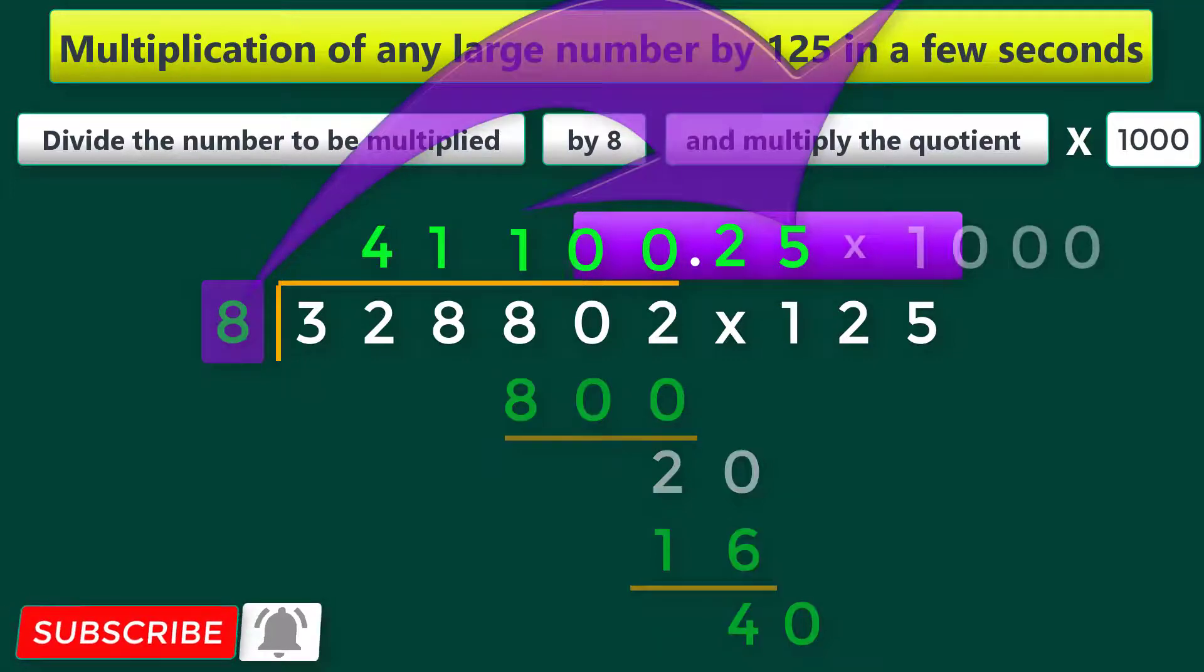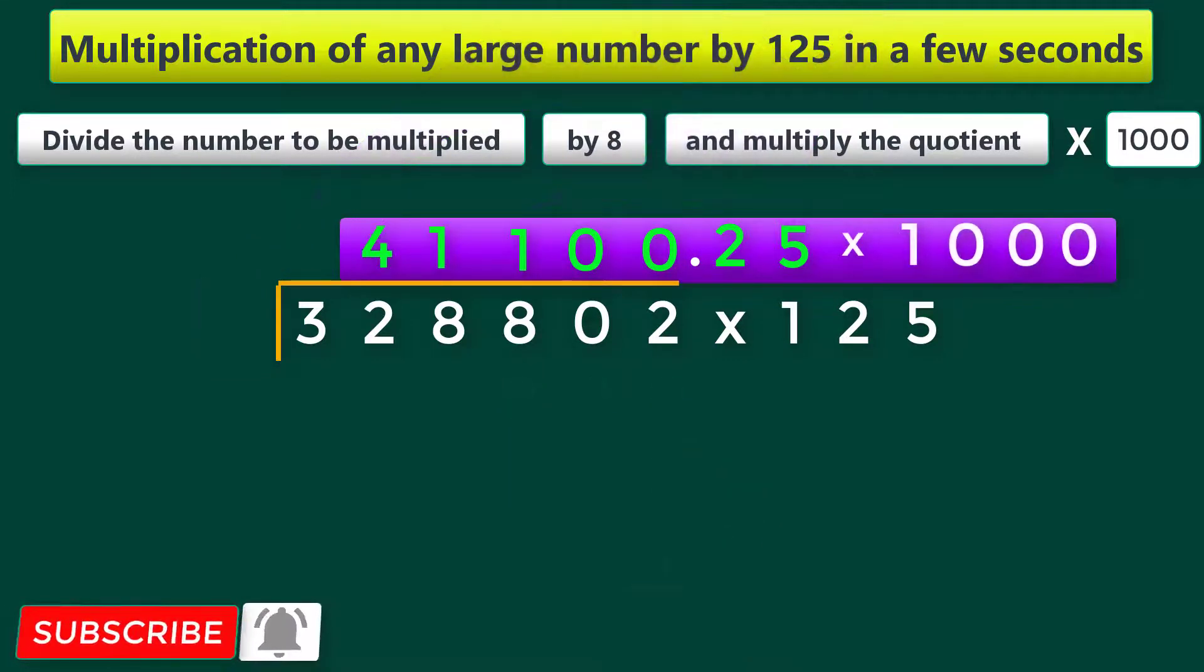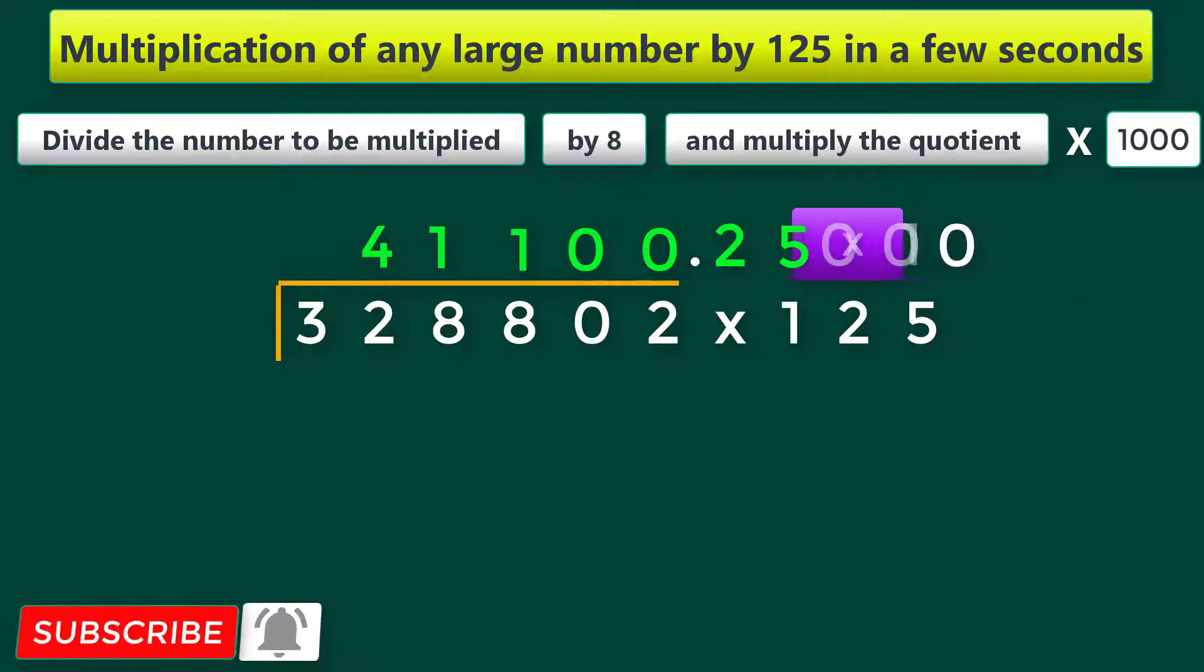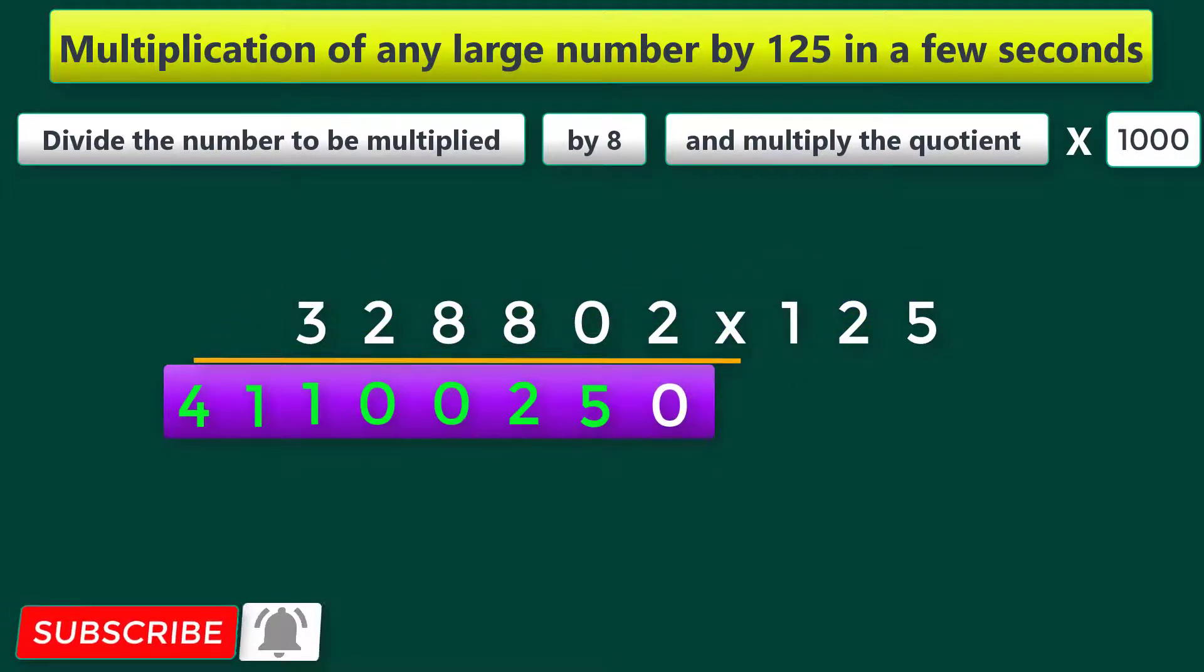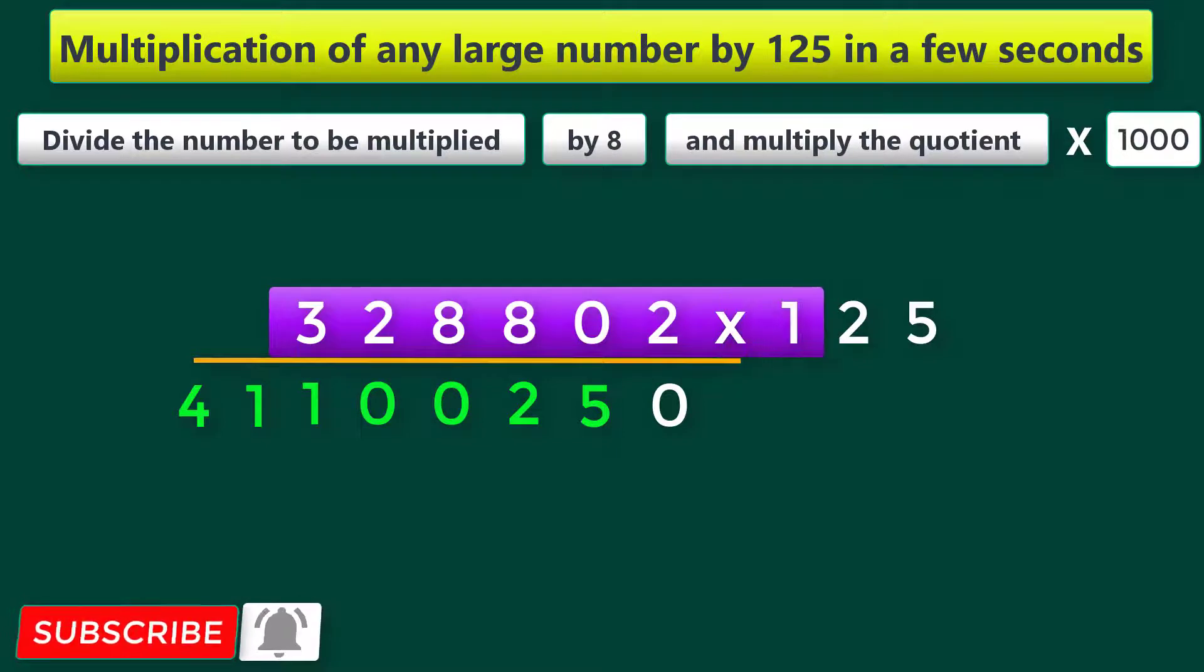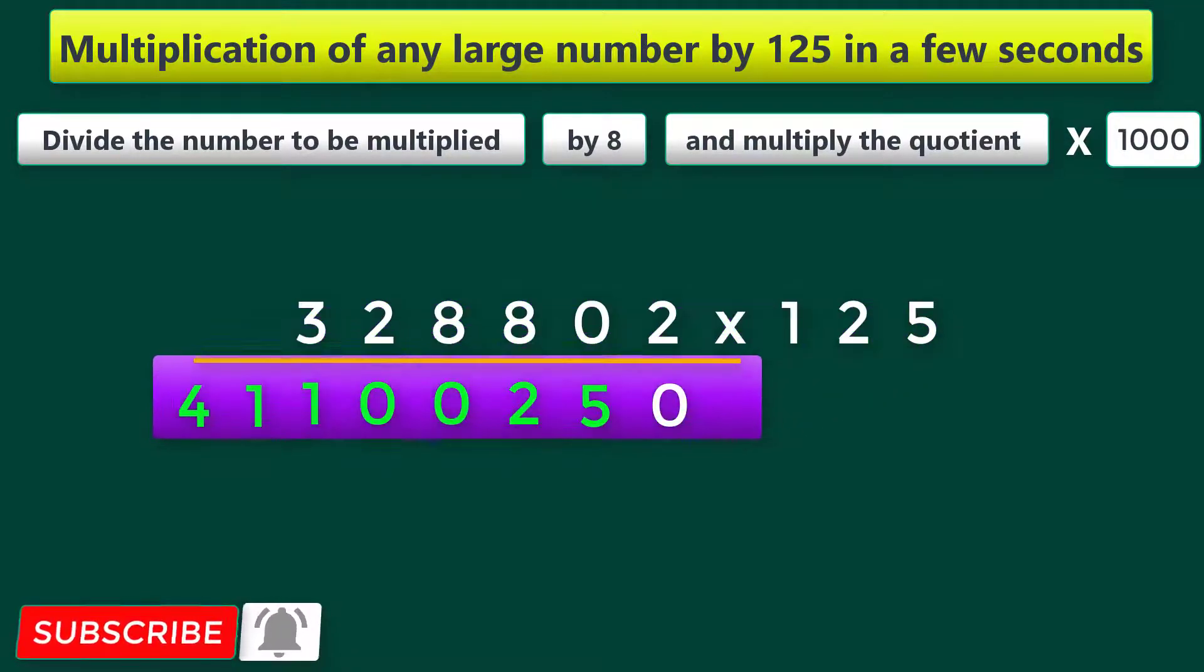Now this quotient has to be multiplied by 1000. So instead of multiplying this quotient by 1000, just put these three zeros after this decimal point and take the decimal point to the end of the number. That's all. Even if the number 3,28,802 is multiplied by 125, you will get the same answer.